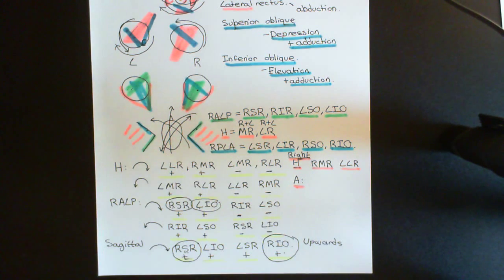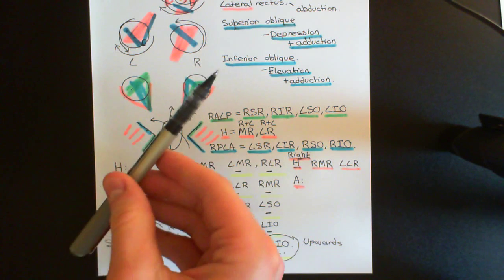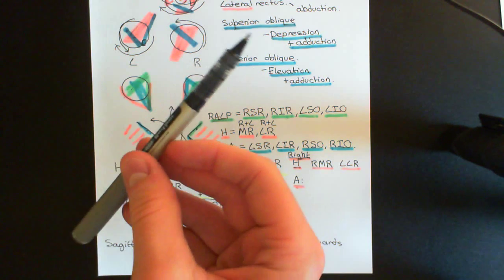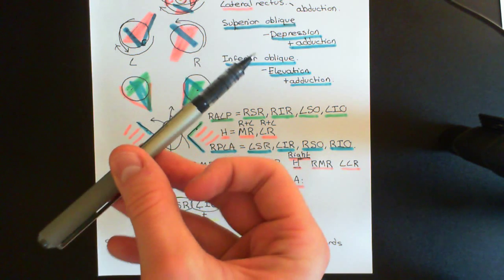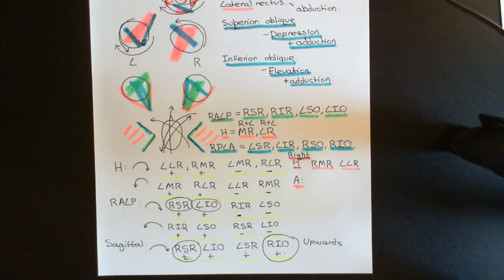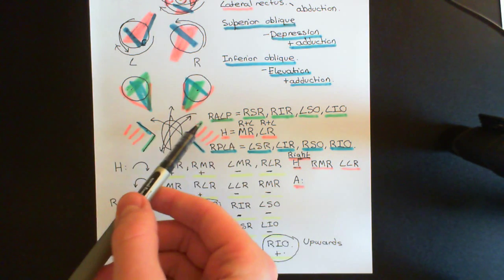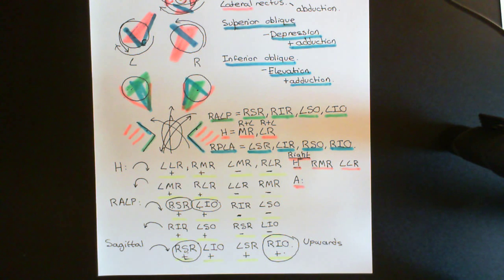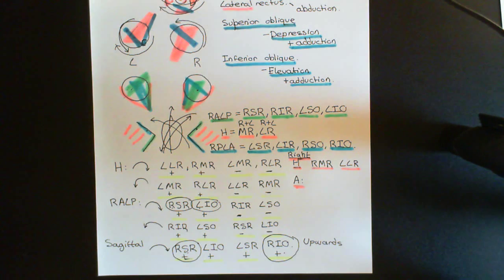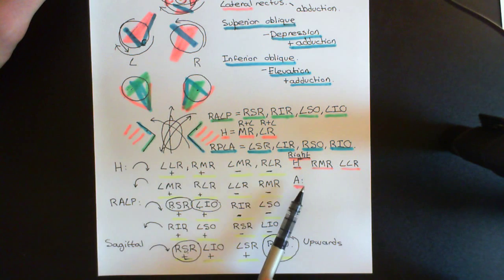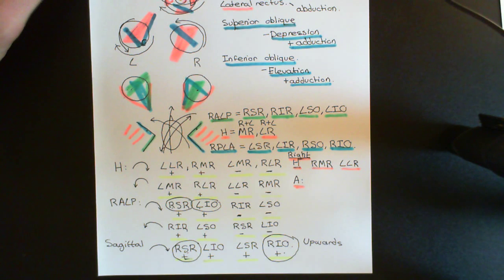The right anterior semicircular canal is activated when we move our head downward and forward to the right. When the head moves that way, the fluid goes backward away from the ampulla of the right anterior semicircular canal, and because the hair cells in the anterior and posterior semicircular duct ampullae are oriented away from the utricle, this activates them. So this canal connects to the muscles we'd want to activate to maintain the retinal image.